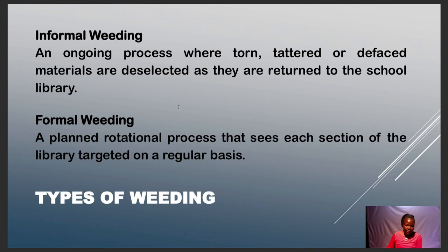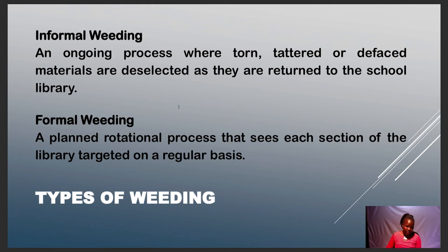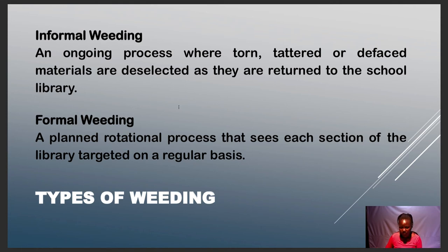Weeding has two types: informal weeding and formal weeding. Informal weeding is an ongoing process where torn, tattered, and defaced materials are deselected as they are returned to the library. Formal weeding is a planned rotational process that sees each section of the library targeted on a regular basis, usually planned within a collection development policy.